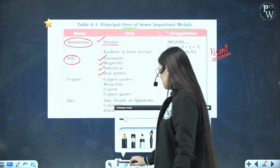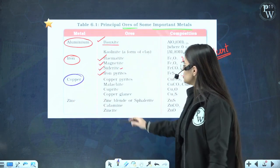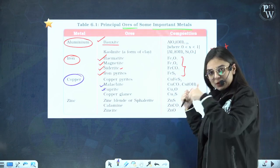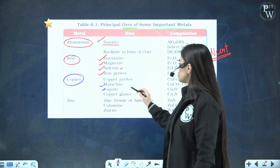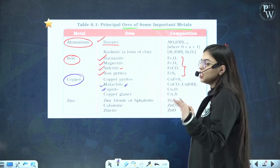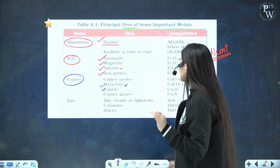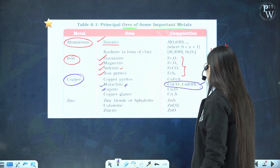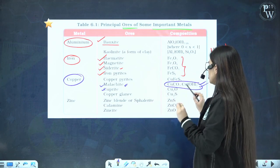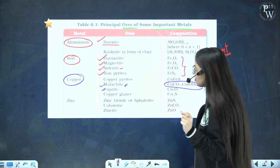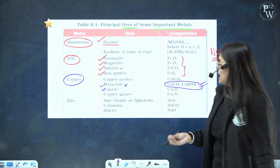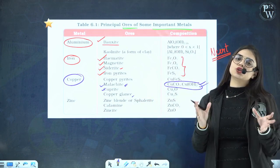Moving on to the metal copper — cuprite and malachite are both really important. Copper pyrites has composition CuFeS2. Malachite has composition CuCO3·Cu(OH)2 — put a big tick mark here. Cuprite has composition Cu2O, which is also really important. Copper glance has composition Cu2S.